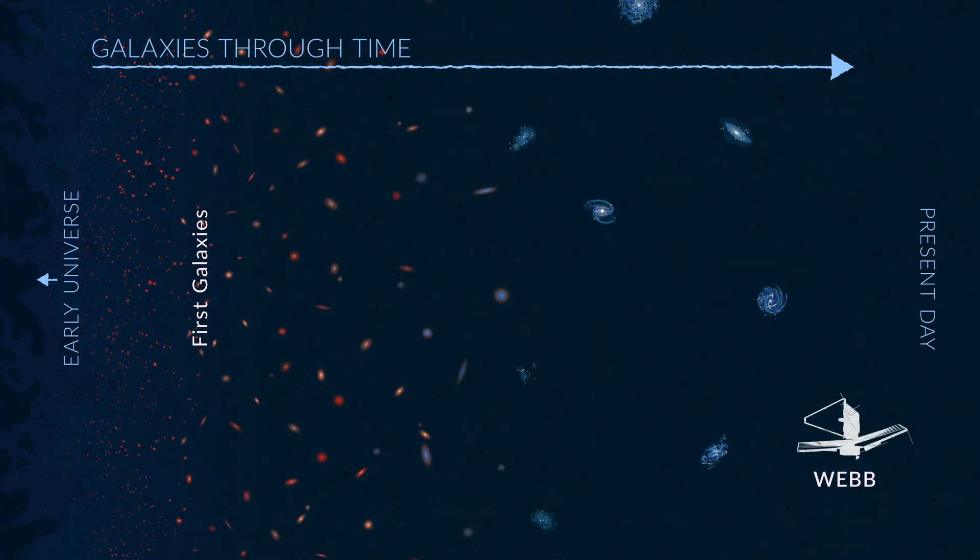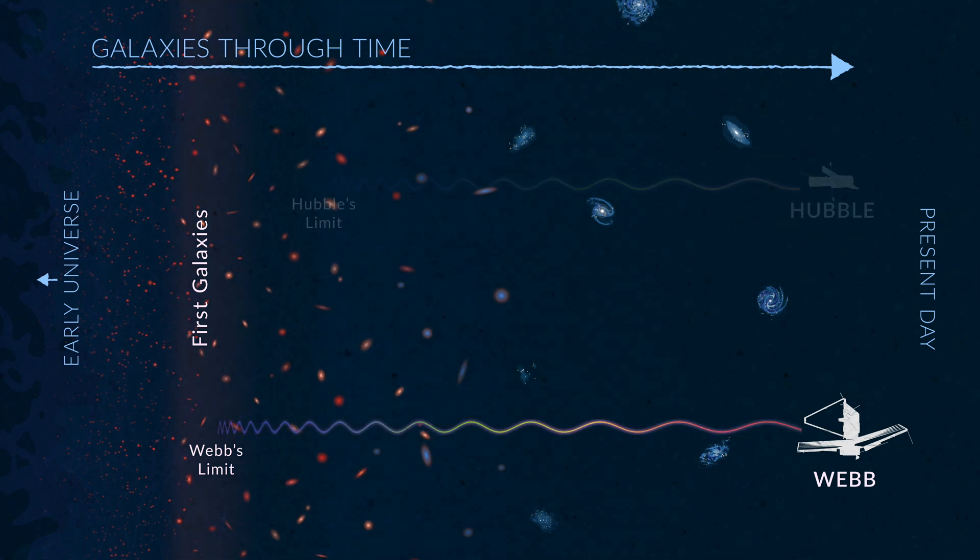NASA's James Webb Space Telescope was specially designed to detect the ancient, stretched light from the first galaxies.